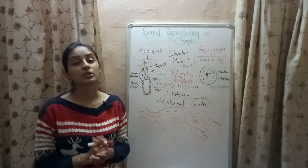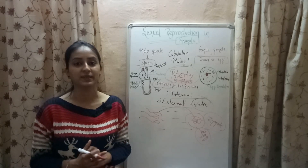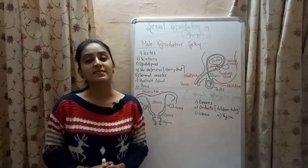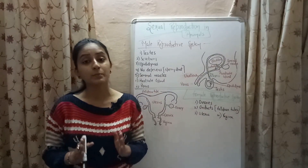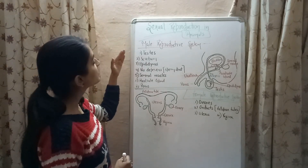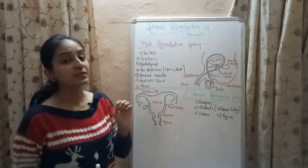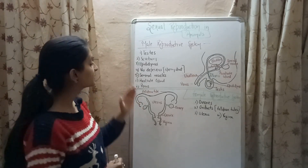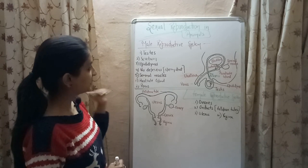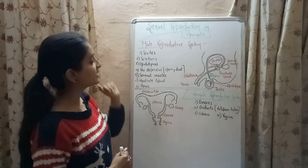Let's have a look at the male and female reproductive structures in human beings. The male reproductive system consists of seven major organs: testes, scrotum, epididymis, vas deferens (also known as sperm duct), seminal vesicles, prostate gland and penis.